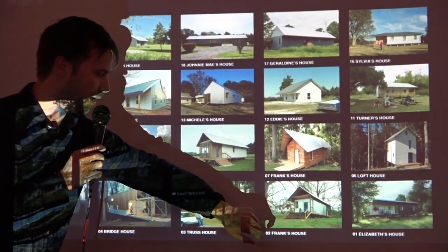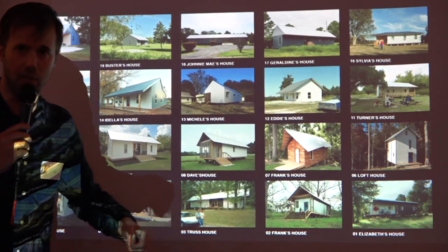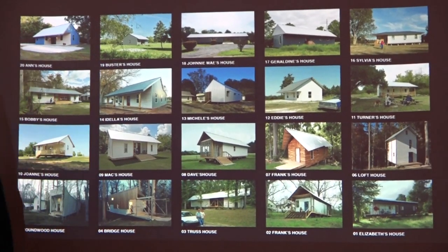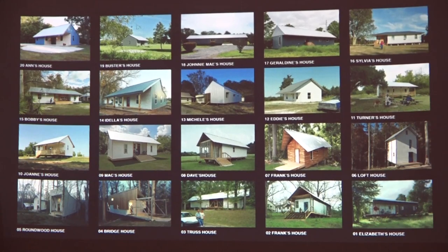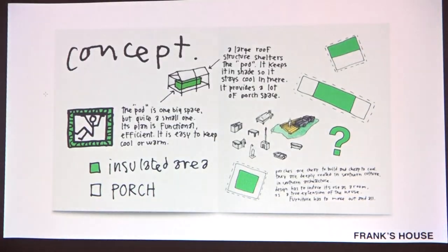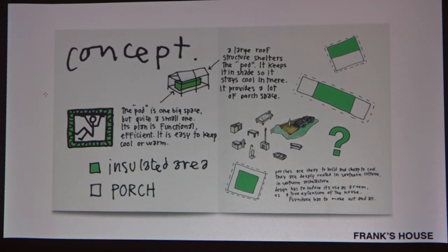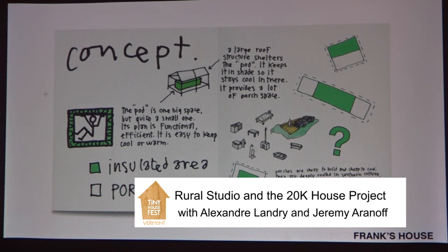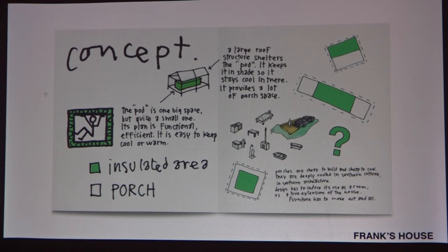The second prototype is Frank's House, which I designed and built with the team at Rural Studio. Jeremy worked on the Trust House. We worked on these projects at the very early beginnings of the 20K house project. With Frank's House, we rebuilt a version of the first prototype to understand every detail of how it's made, drew conclusions, and then came up with a new concept.